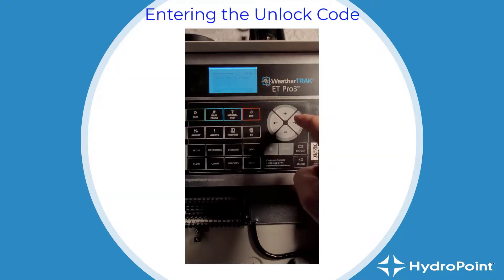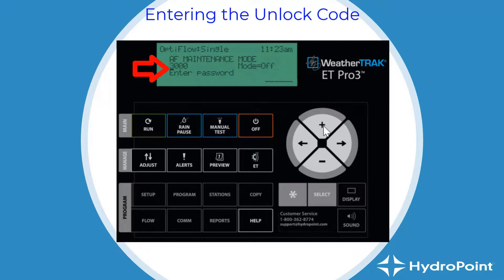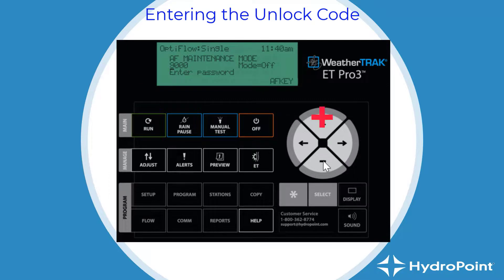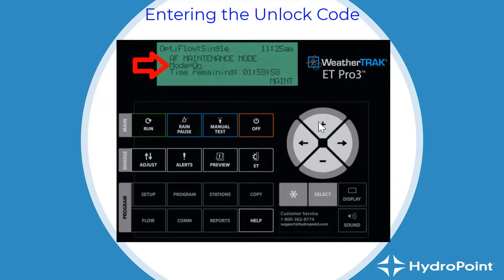Once you've found that code, take it to the controller and manually enter the unlock code into the panel to gain access to the maintenance features. At the panel, start by hitting the Run button to go to the Run screen. Then press the forward arrow and it will take you to a screen that says 'AF Maintenance Mode' — this is where you enter the four-digit code. Be mindful of the cursor. Use the plus and minus buttons to select the right digit in the first column, then use the forward arrow to move the cursor to the second column and repeat. Go through all columns selecting the proper code, and when you enter the correct unlock code, the panel will immediately unlock.